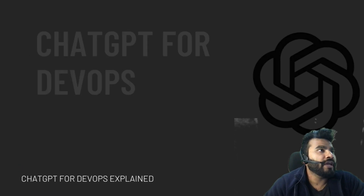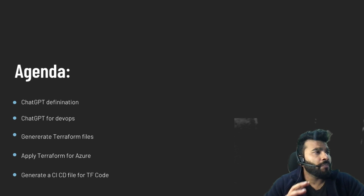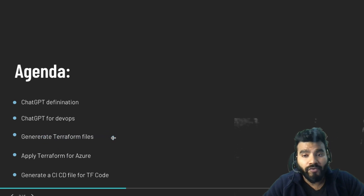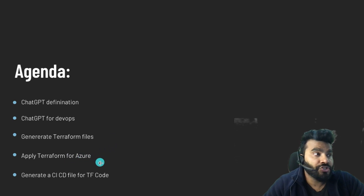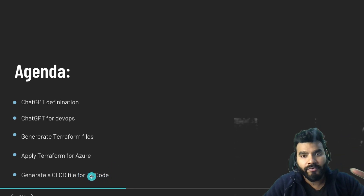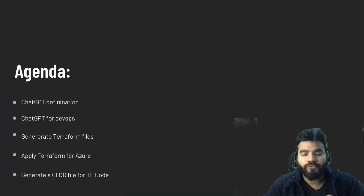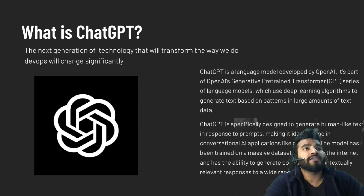Here's the agenda. We'll start with the ChatGPT definition, then cover ChatGPT for DevOps — not so much the definition, but getting into actual configuration. In the hands-on part, we're going to generate Terraform files using ChatGPT and apply them on Azure. In an upcoming session, we'll generate CI/CD pipeline files for Terraform code across platforms like Bitbucket, GitHub, GitLab, and Azure DevOps.